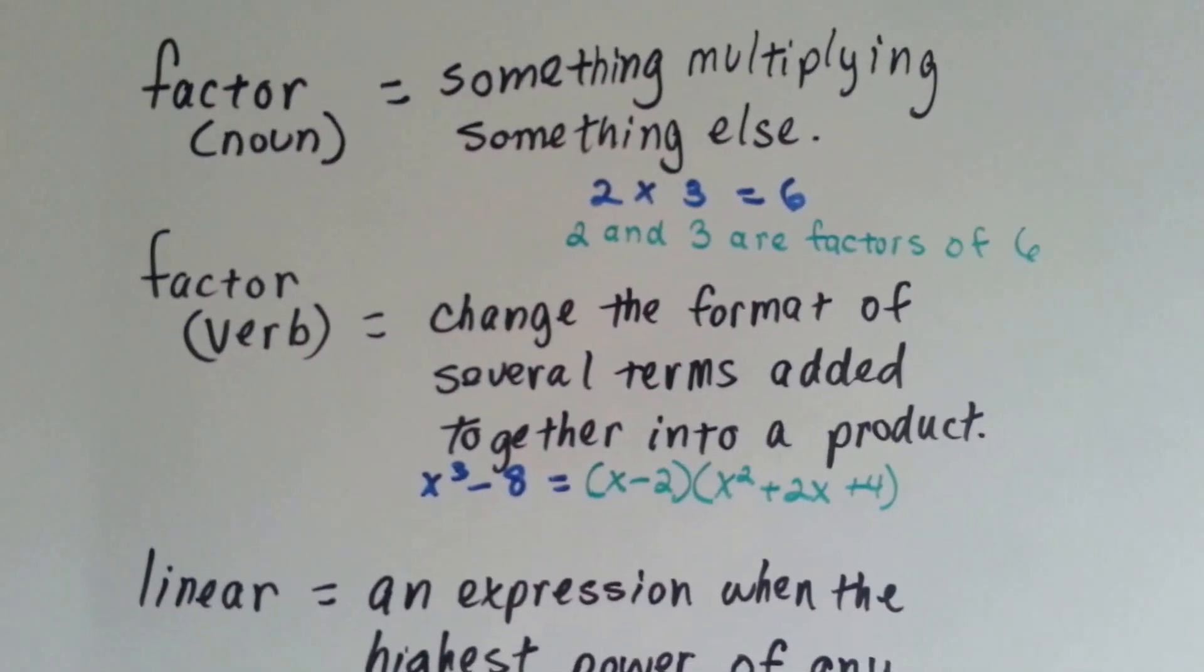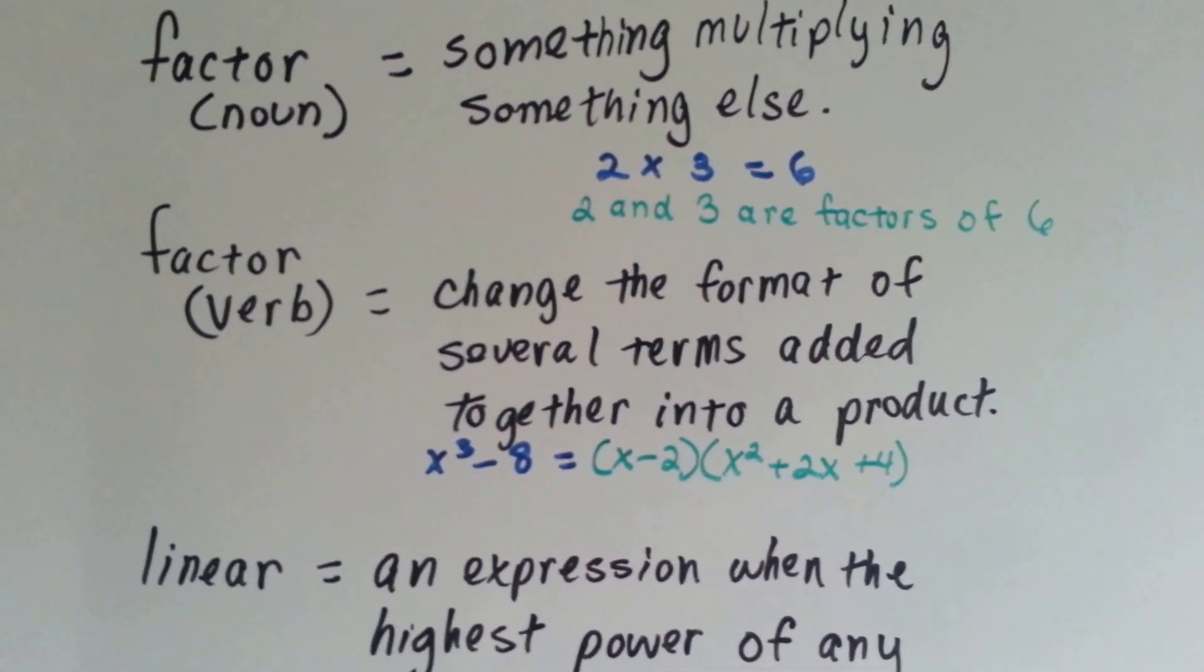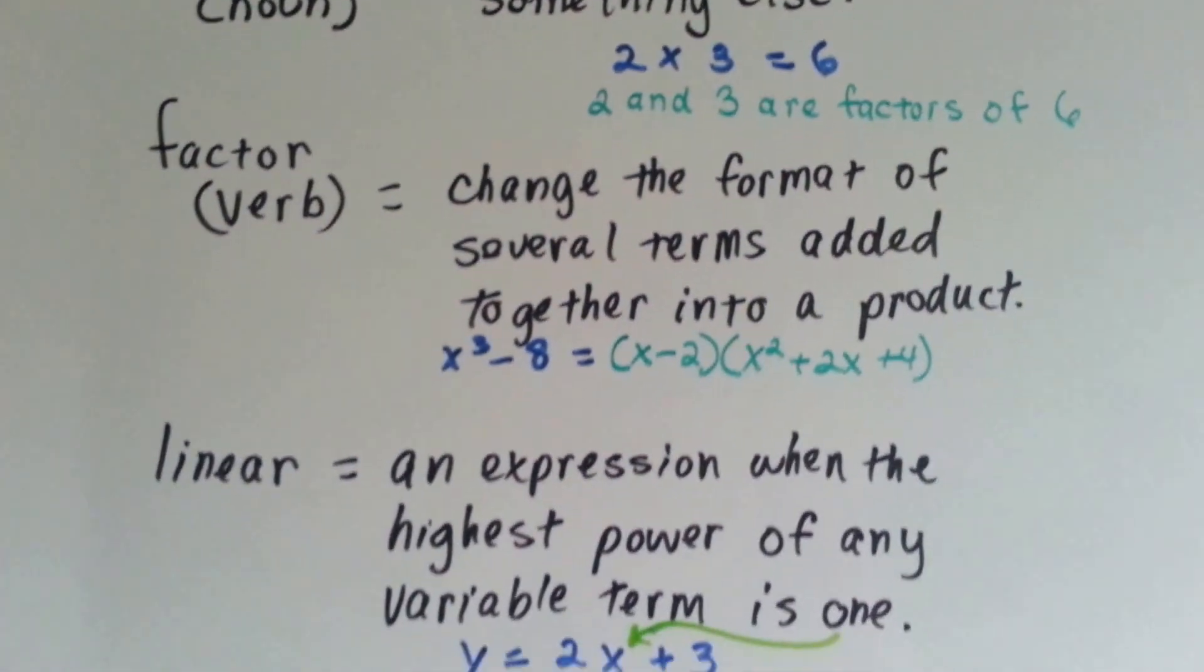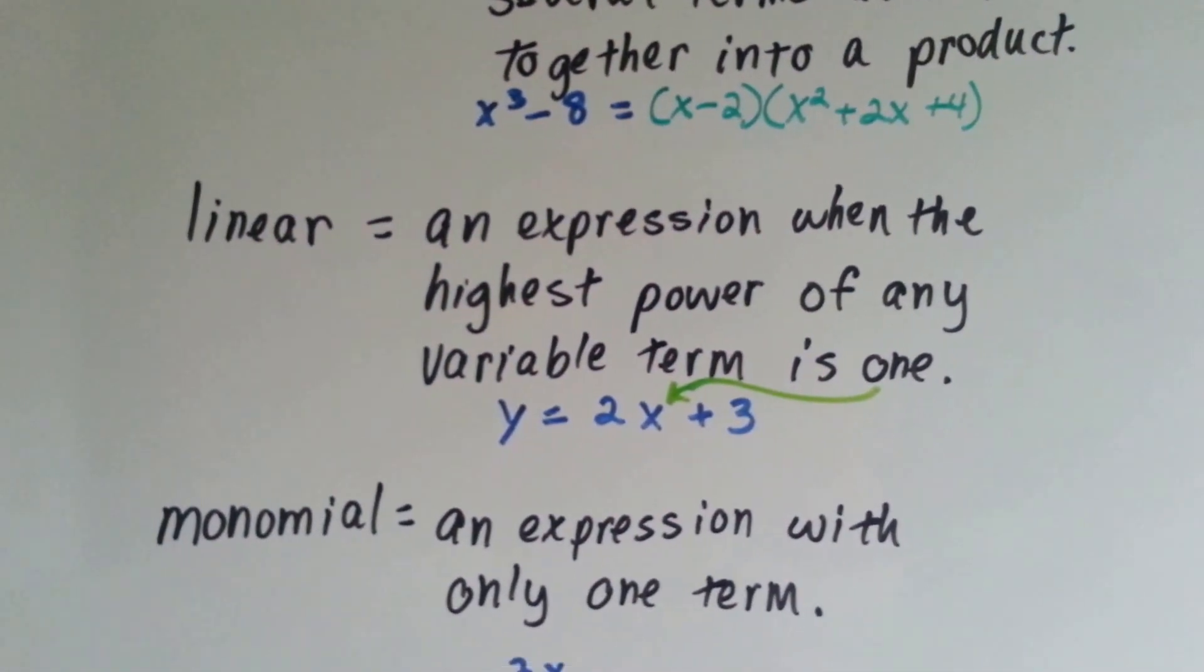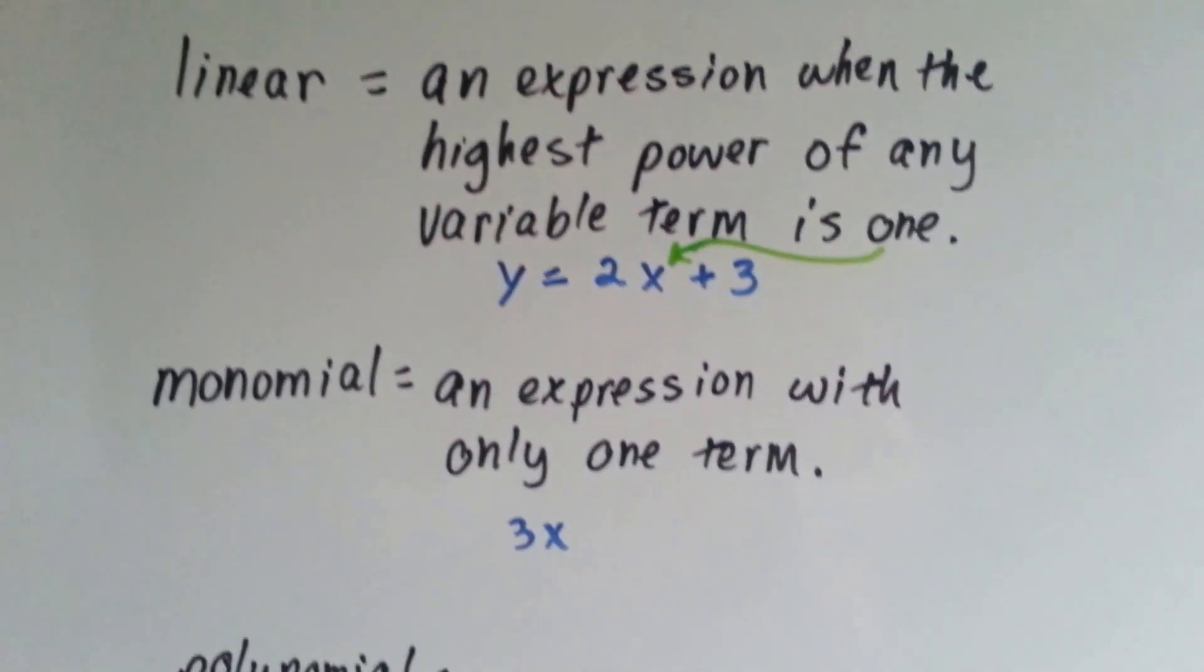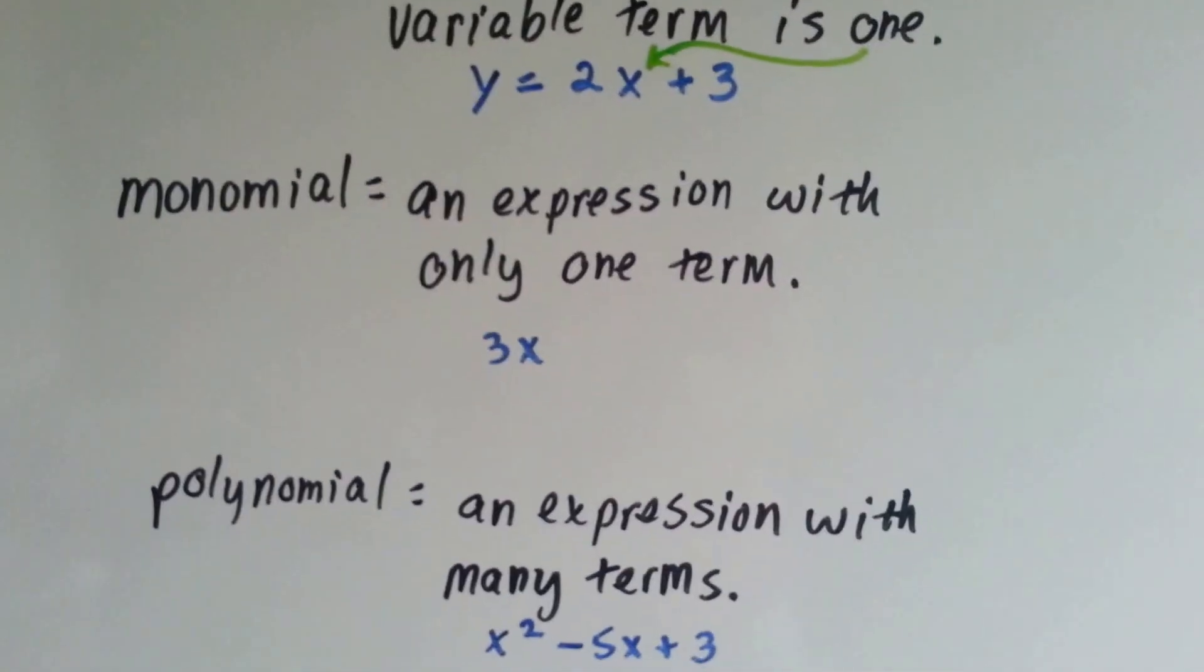To factor, or factoring, that's to change the format of several terms added together into a product. Linear, an expression when the highest power of any variable term is 1. A monomial, an expression with only one term.